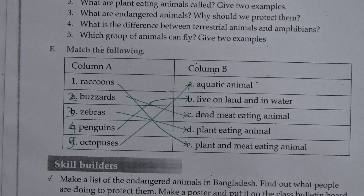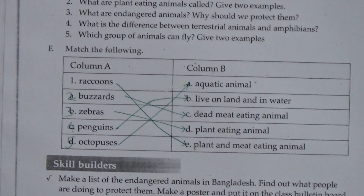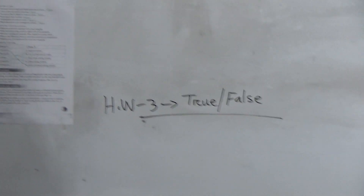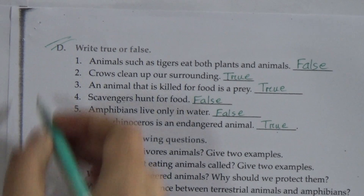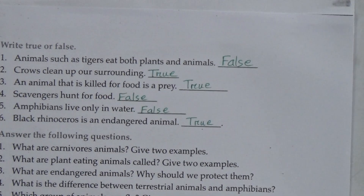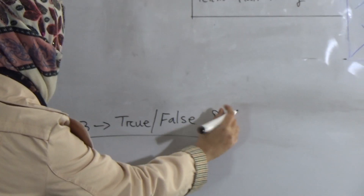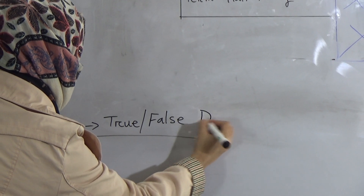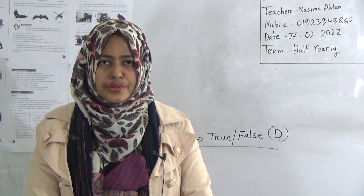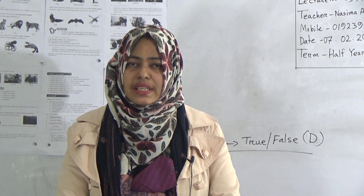So students, I hope you have understood today's topic. Now for homework, HW number 3: your homework will be Exercise D, the true or false section with 6 questions. You will do this in your HW copy and submit on the next Saturday from 8am to 3pm. Stay home and we will see you again in our next class. Thank you very much.